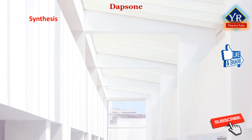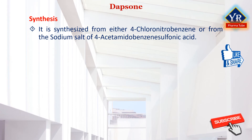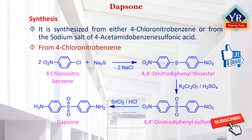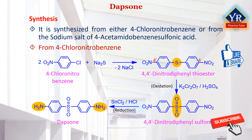Synthesis of Dapsone. Dapsone is synthesized from either 4-chlorobenzene or from the sodium salt of 4-acetamidobenzene sulfonic acid. In the first method, reacting 4-chlorobenzene with sodium sulfide gives 4,4-dinitrodiphenyl thioether, and oxidation of the sulfur atom using potassium dichromate in sulfuric acid gives 4,4-dinitrodiphenyl sulfone. Reduction of the nitro group using tin dichloride in hydrochloric acid gives the desired Dapsone. It has also been suggested to reduce the nitro group to an amine, protect with an acetyl group, oxidize the sulfur atom to a sulfone using potassium dichromate, and then remove the protecting acetyl group by hydrolysis.